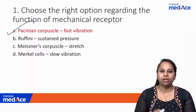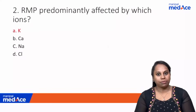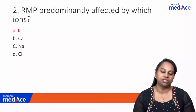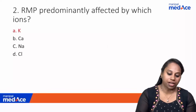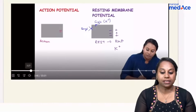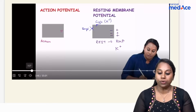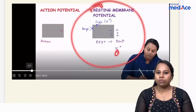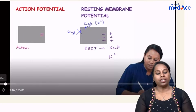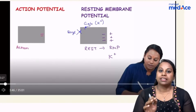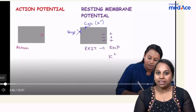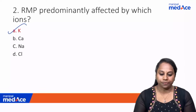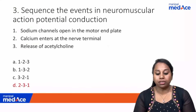Question 2: Resting membrane potential is predominantly affected by which ion? The answer is potassium. This is a repeatedly asked topic. At rest, the cell is most permeable to potassium only, which is why RMP mainly depends on potassium ion concentration. The answer is option A: potassium.